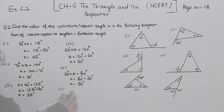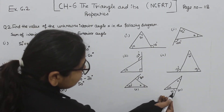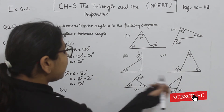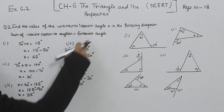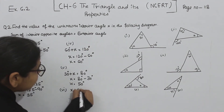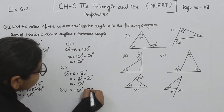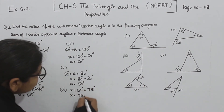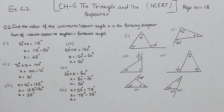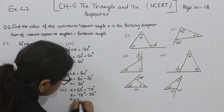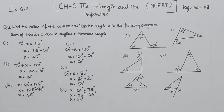Now comes part 6. In part 6, the exterior angle is 75 degrees and the interior opposite angles are 35 degrees and x. The sum of interior opposite angles equals the exterior angle: x plus 35 degrees equals 75 degrees, so x equals 75 minus 35, giving x equal to 40 degrees.